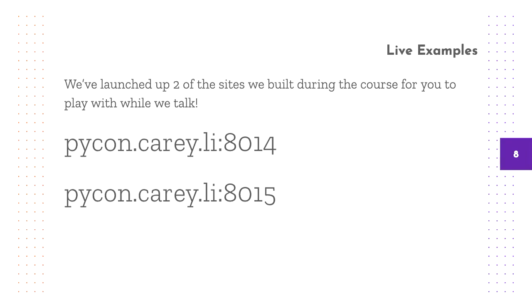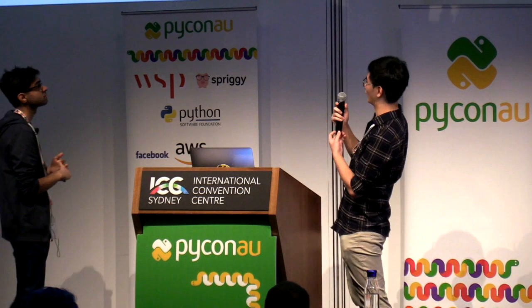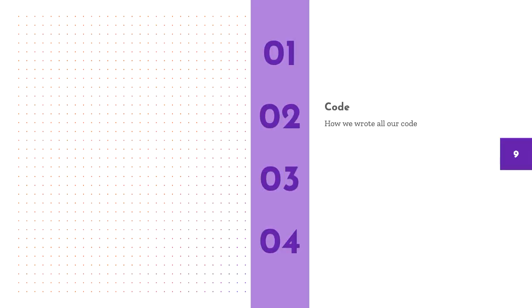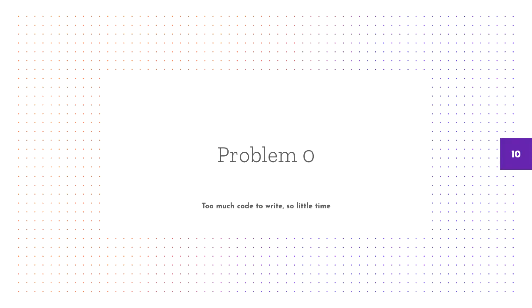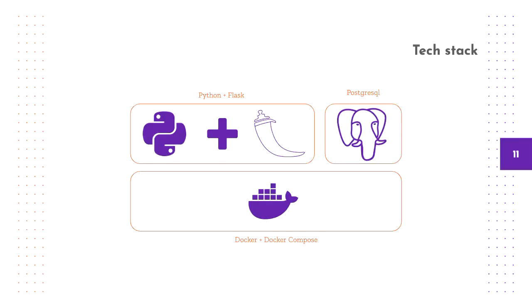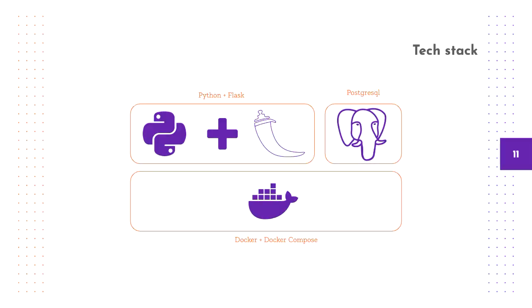We actually launched two sites you can visit — those URLs are on screen if you have a laptop. So, let's talk about code. The first problem we encountered quickly was that we had to write a lot of code and didn't have a lot of time. We came up with a tech stack: Python and Flask formed the web applications. If we needed a database we had Postgres, and everything was wrapped in Docker and orchestrated in Docker Compose.